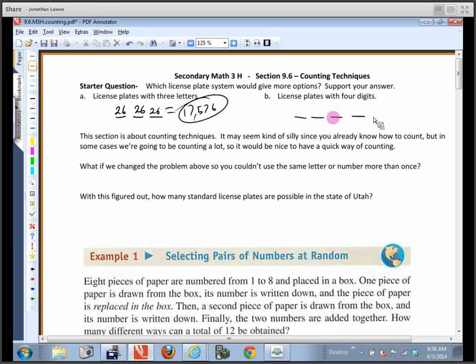Even though we have more slots available here, how many choices do we have for each one of these digits? So all together that's going to be 10,000 choices there. So what we've just demonstrated right here is a counting technique that's going to be outlined in the section.